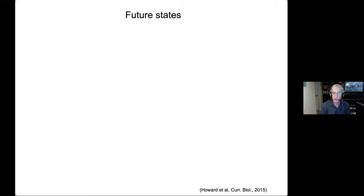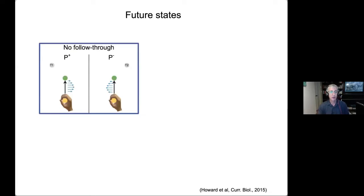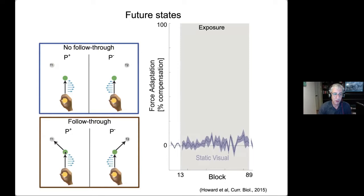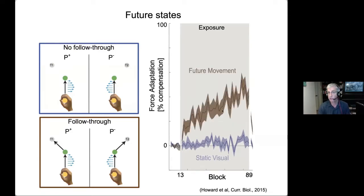The past is an important cue to separate memories for different skills. We also wondered whether the future could be important. We ran a group who followed through the movement — going through the force field and then following through to the left or right without the force field. A group with an irrelevant follow-through target couldn't learn anything, but when the follow-through was task-relevant, we see substantial learning. This suggests that doing something different in the future allows you to separate motor memories.